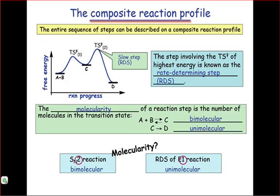On the composite reaction profile, we can really see where thermodynamics and kinetics come into play. The thermodynamics of the reaction is controlled by the energy difference between A and B and D, the starting materials and products.